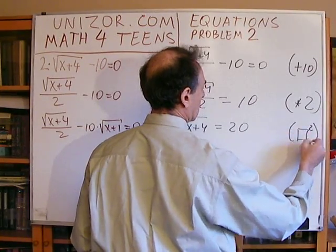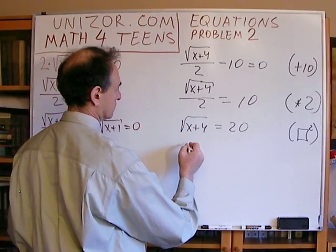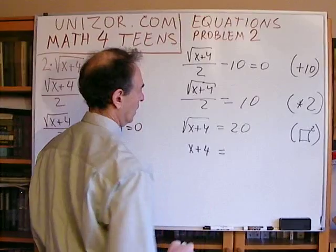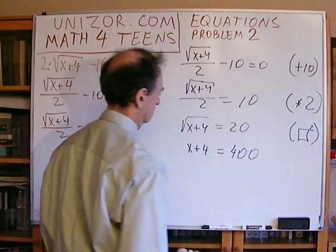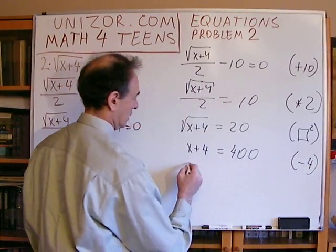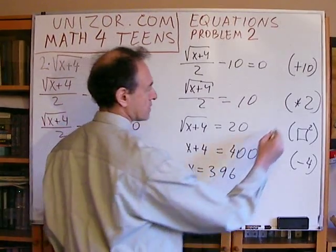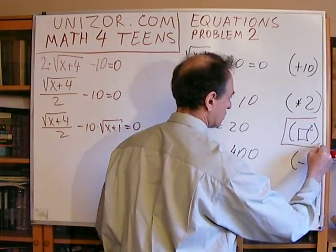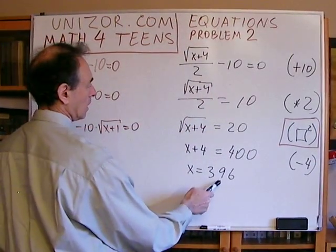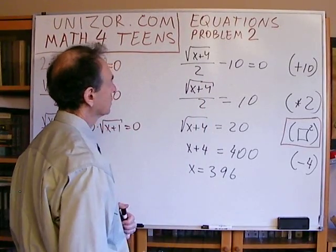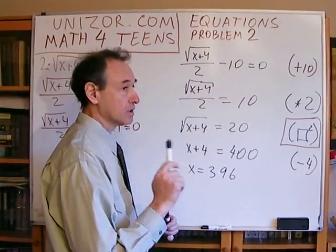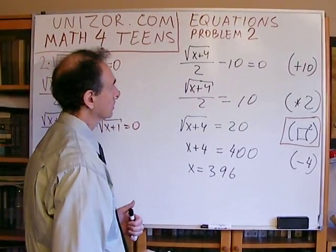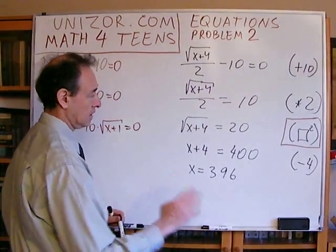Squaring both sides: x + 4 = 400, so x = 396. This squaring is a non-invariant transformation, so checking is mandatory. Check: 396 + 4 = 400, square root is 20 — again, only 20, not minus 20, because this always means the positive value. Divided by 2, that's 10 minus 10 = 0. Everything checks. Solved fine, no problem.